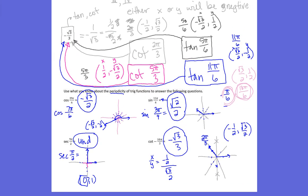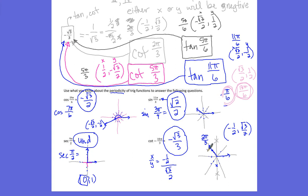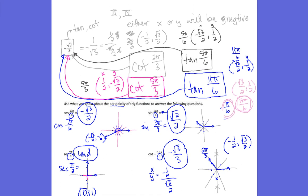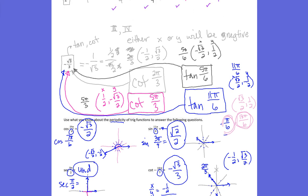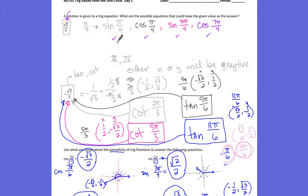So you're going to use the period — count how many times you're going around the circle, hitting every fourth or sixth or third. Use that periodicity idea. For the first type of problem, just write down all the trig functions that give you that answer from the unit circle. Have a great day!